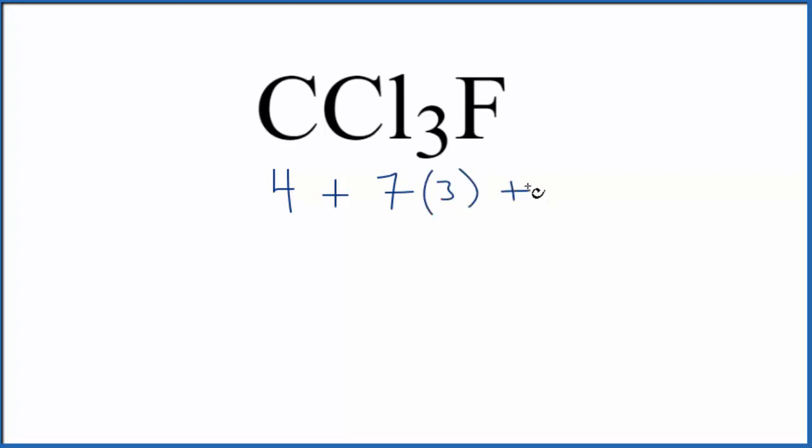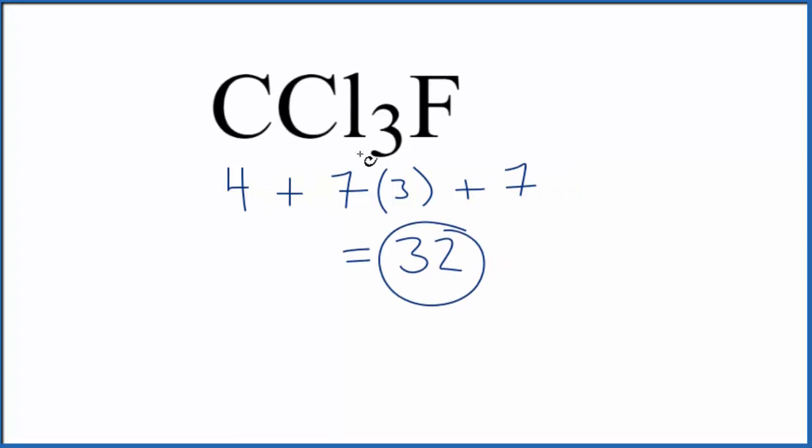So we'll multiply that by 3, plus fluorine, which is in the same group here as chlorine, so that has 7 as well. We add all these up, we get 32 total valence electrons for CCl3F.